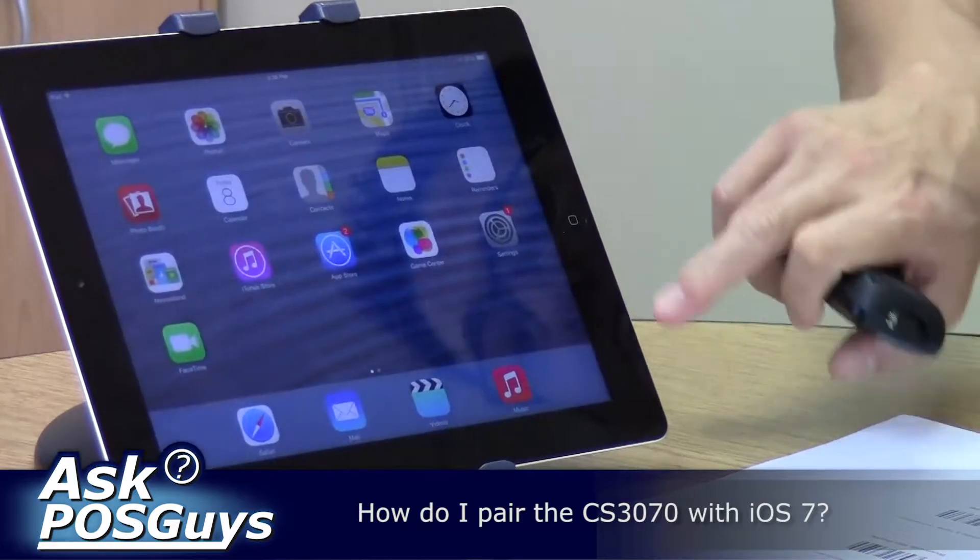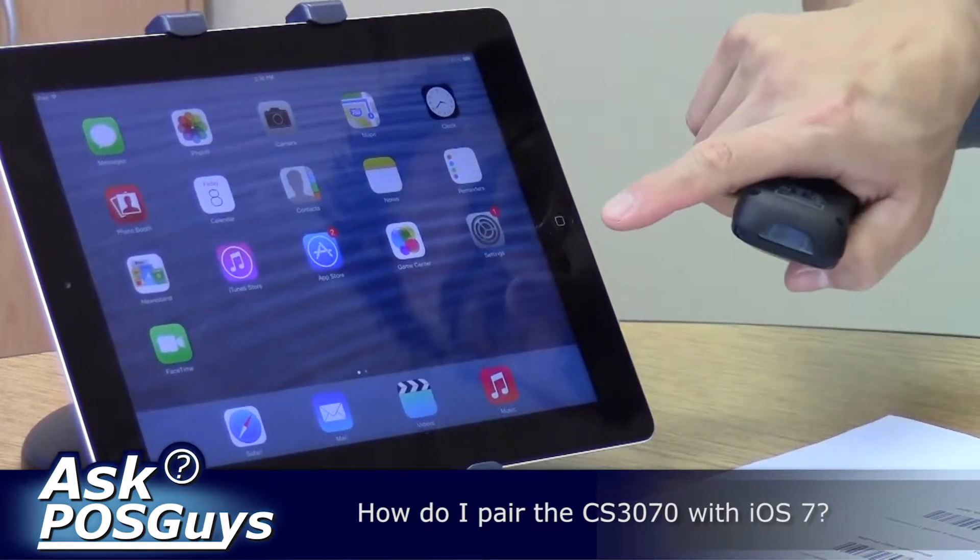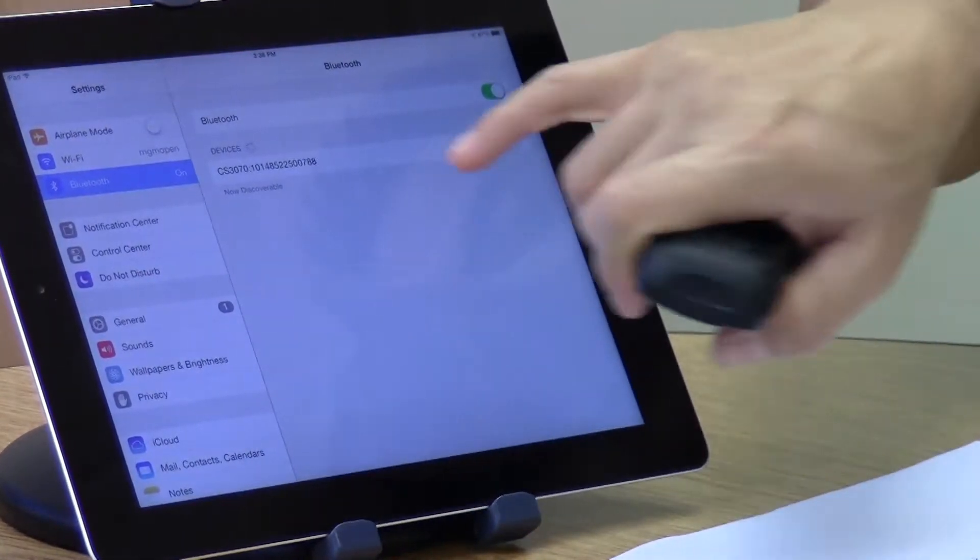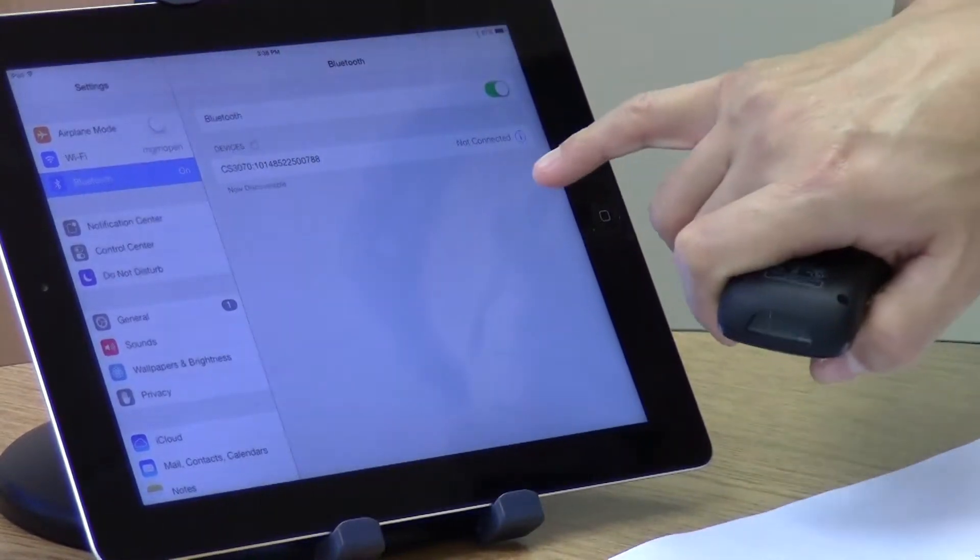From your main screen, you click on settings, and then you go to Bluetooth, and this is the screen you'll see.